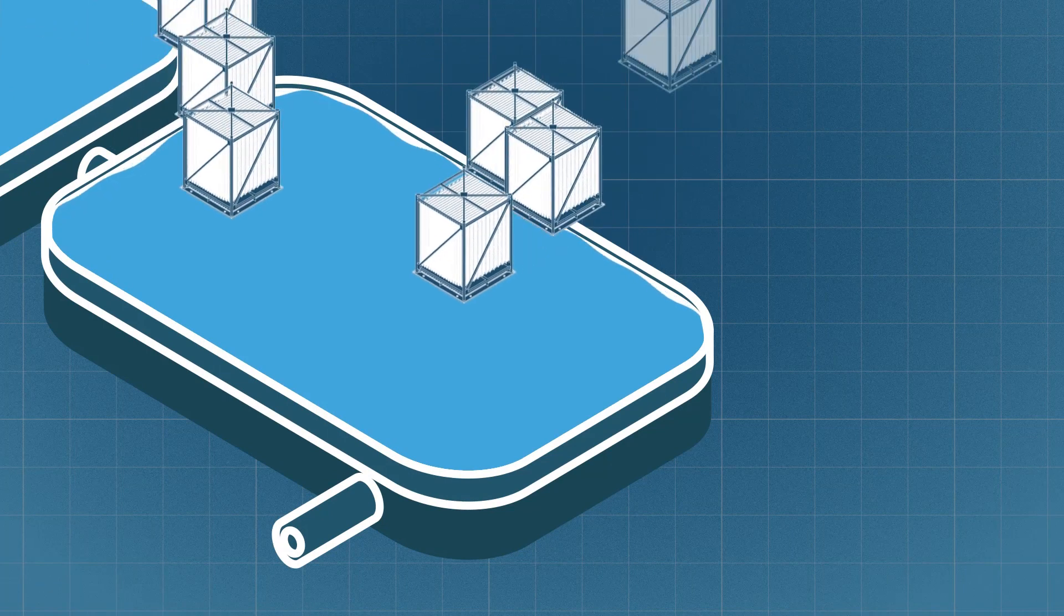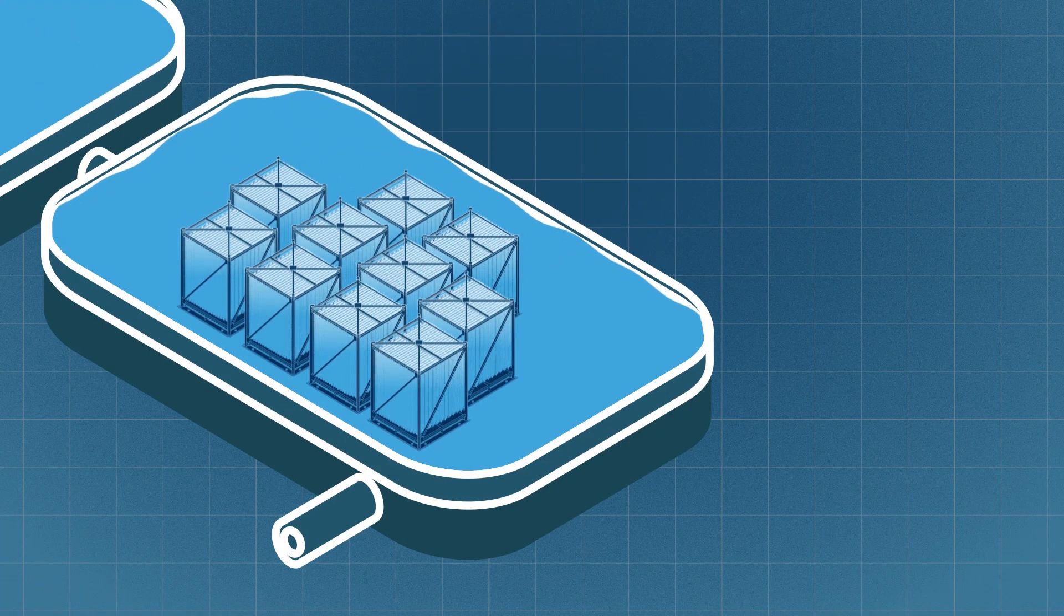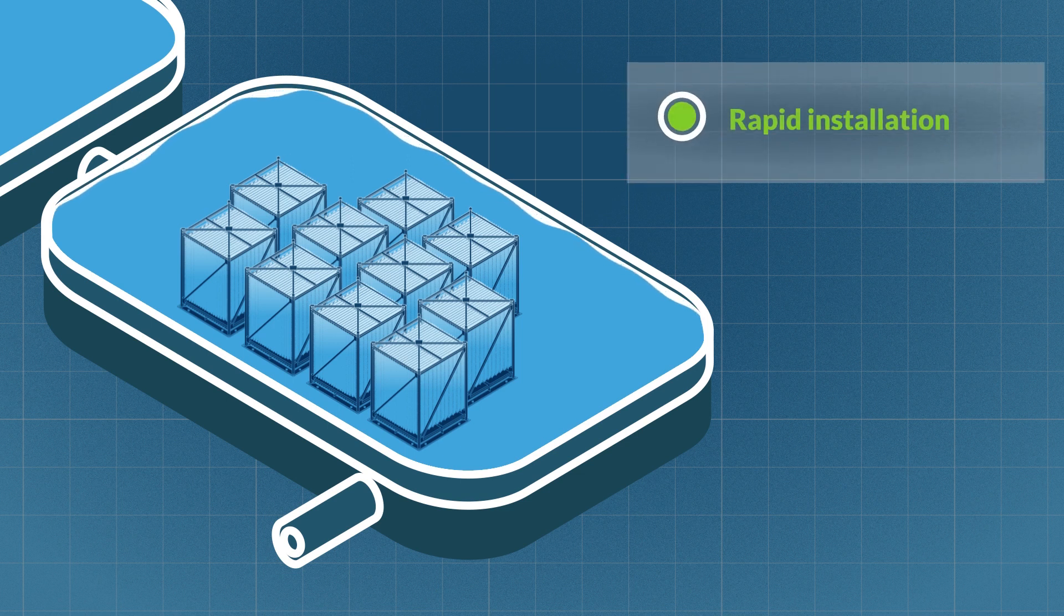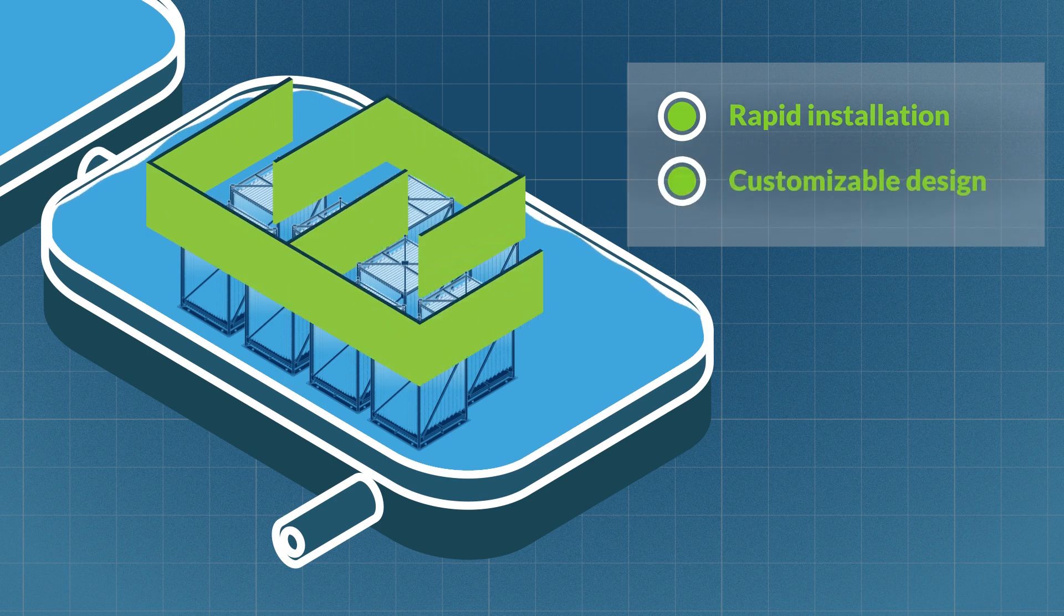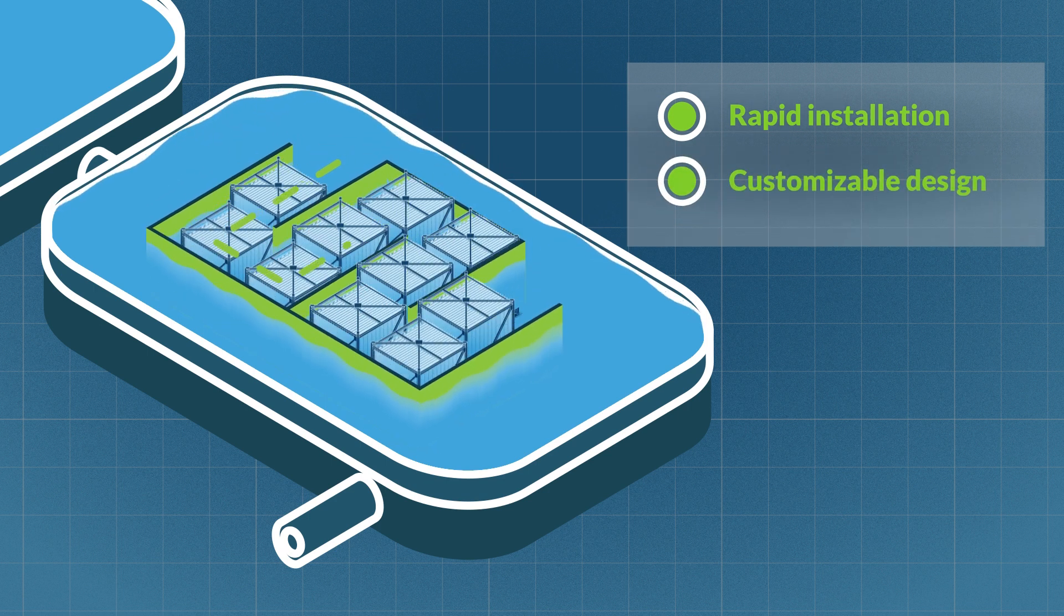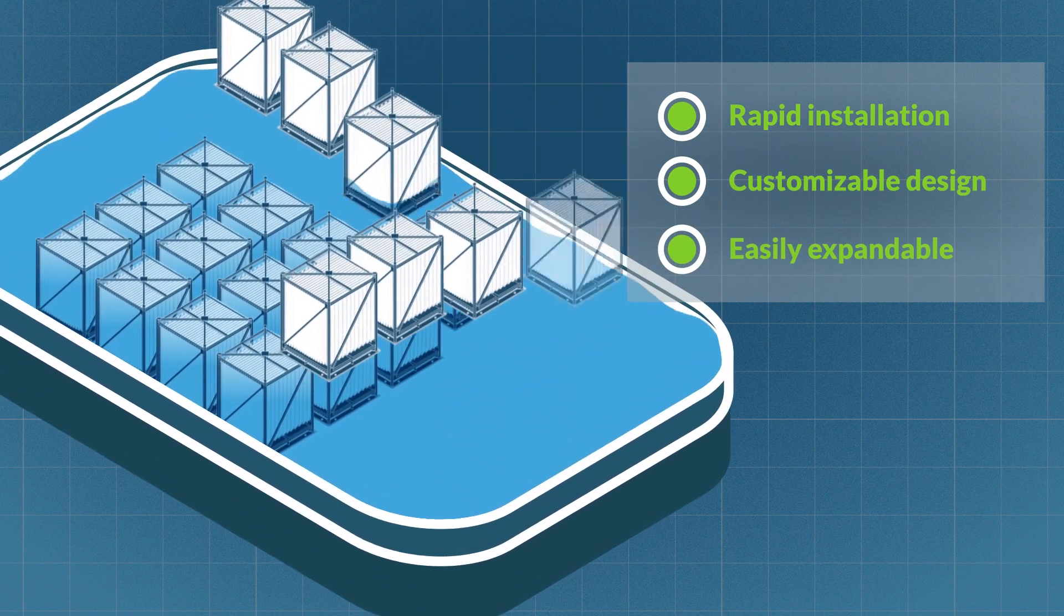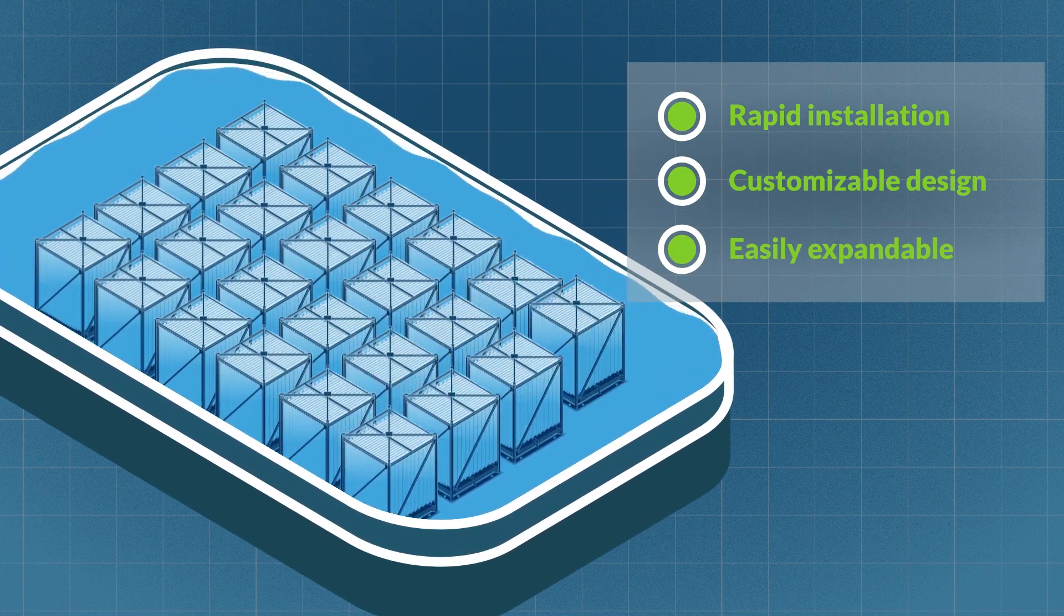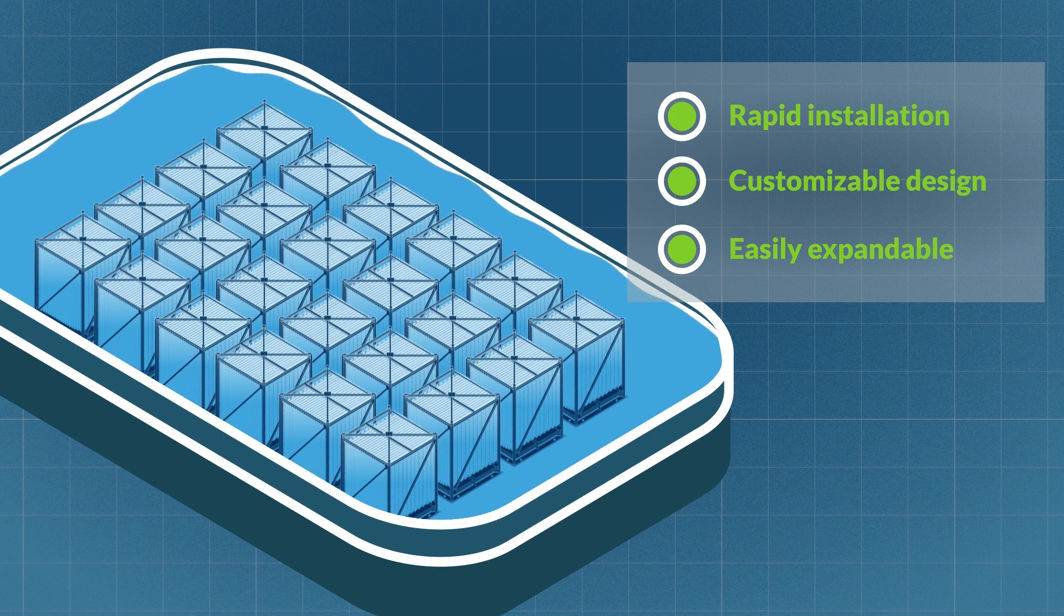Biocord reactors can be quickly installed directly into a treatment lagoon, often while it remains in operation, which helps keep costs low. Baffle curtains can also be added to the biocord cell to maximize process control and contact time with the biofilm. The system is customizable to fit any size and depth of lagoon cell and can be easily expanded, enabling communities to defer capital spending for wastewater treatment until it's needed.